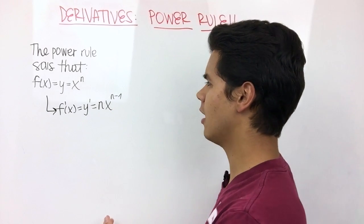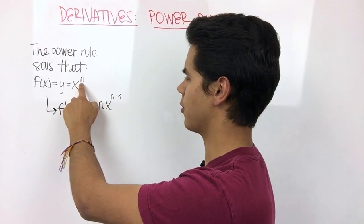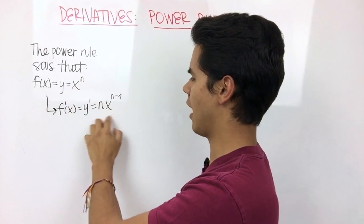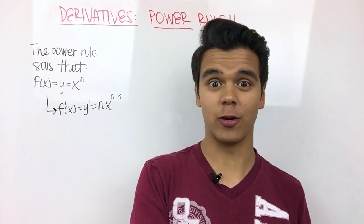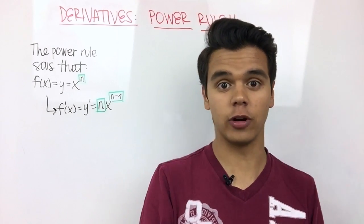I know this formula may look complicated, but you basically just take this number and you stick it in front of the x, and then you just subtract its power by 1. Here I just highlighted the numbers that are important.